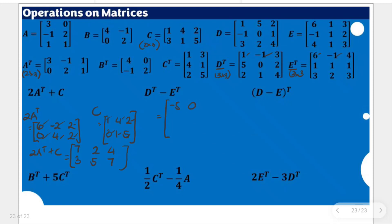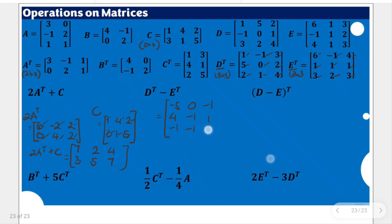3 minus 4 is negative 1. 5 minus 1 is 4. 0 minus 1 is negative 1. 2 minus 1 is positive 1. 2 minus 3 is negative 1. 1 minus 2 is negative 1. 4 minus 3 is positive 1. This is the result for the second item.